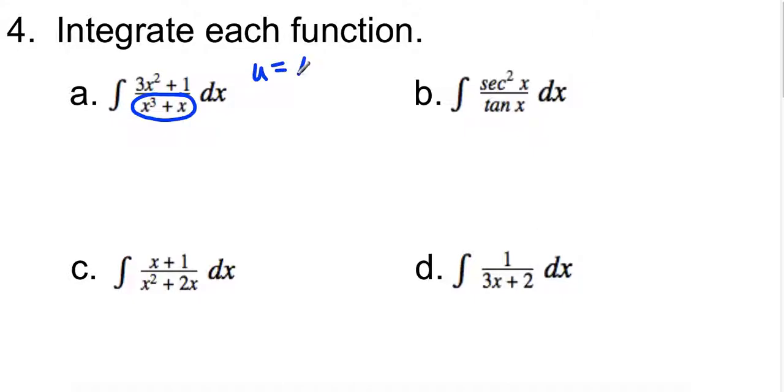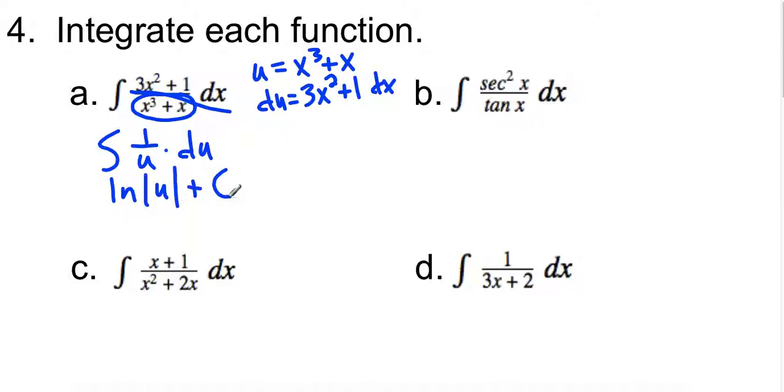So u is x cubed plus x. I'm just going to make du 3x squared plus 1 dx, which is perfect. That's exactly what I have right there. So this becomes 1 over u times du. And then when we integrate that, we just get natural log of u plus c. And then we're going to plug our x back in. It's x cubed plus x.